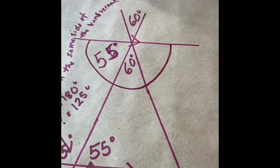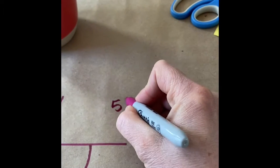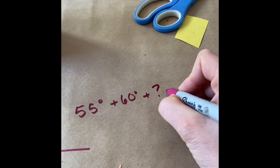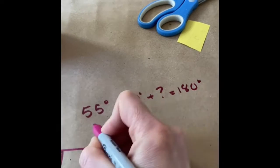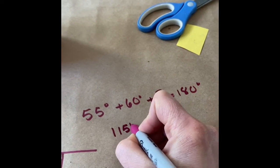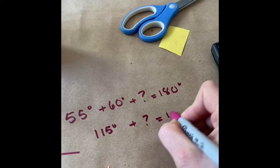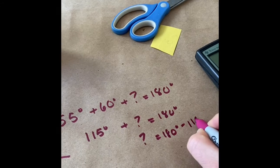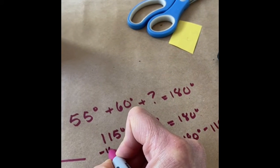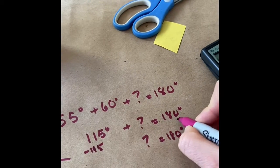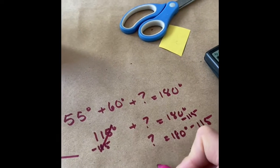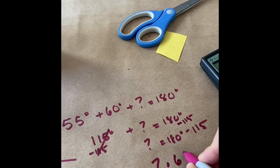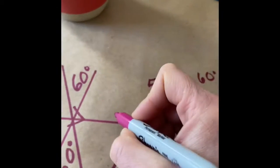So 55 plus 60 plus what number gives you 180? Well 55 and 60 that gives you 115 plus what number gives you 180? Okay, so 180 minus 115, because remember we're balancing the equation these would cancel out, so it equals 65 degrees. So right here this is 65 degrees.